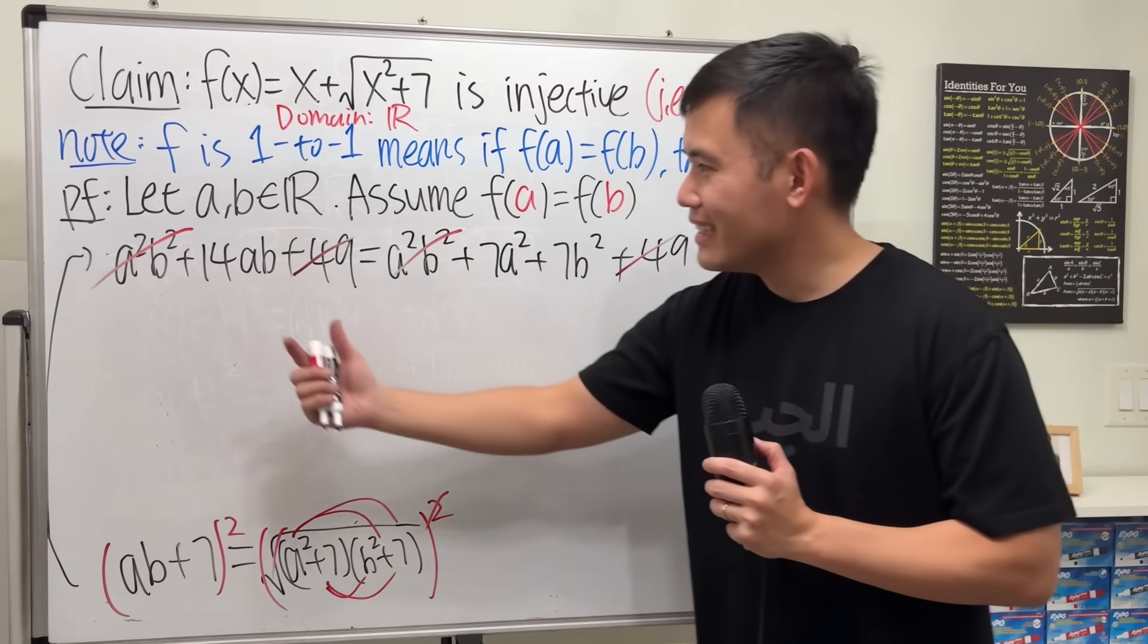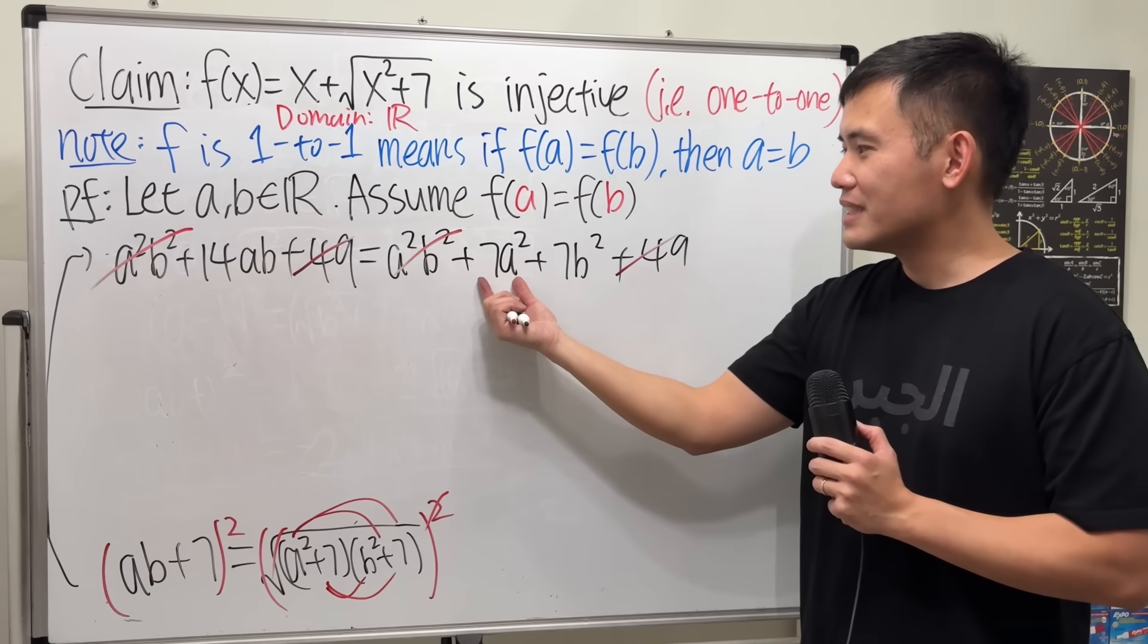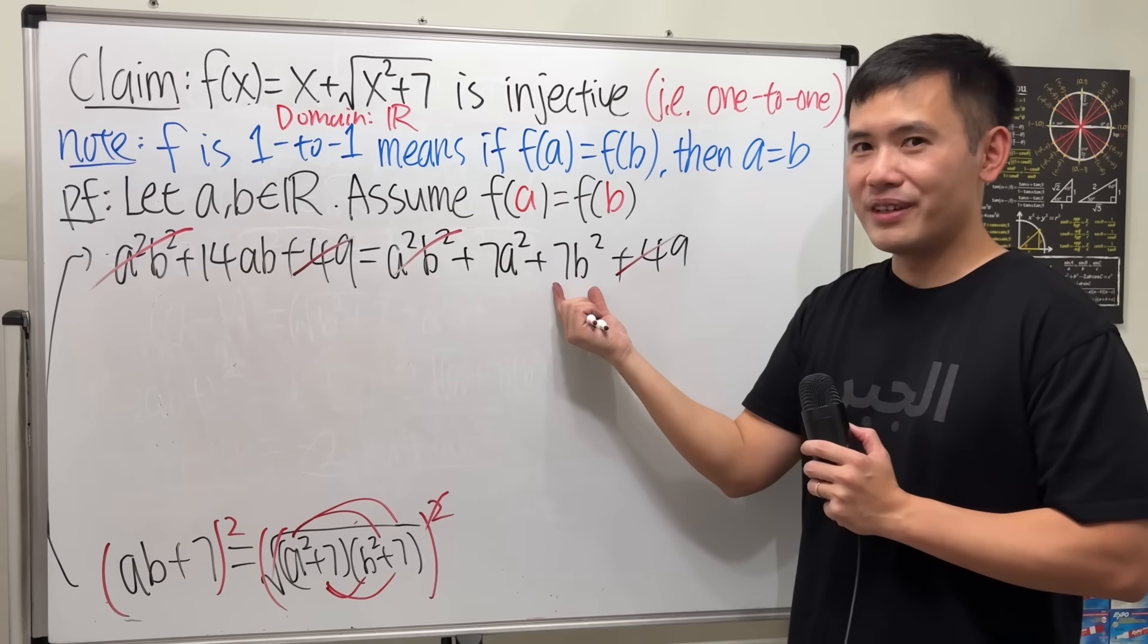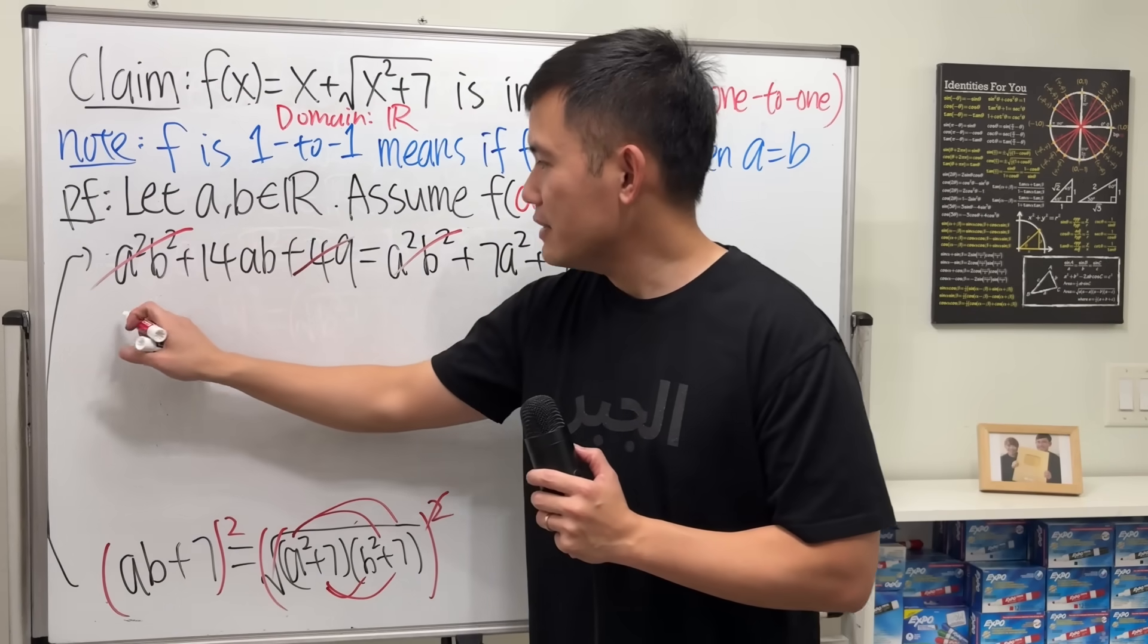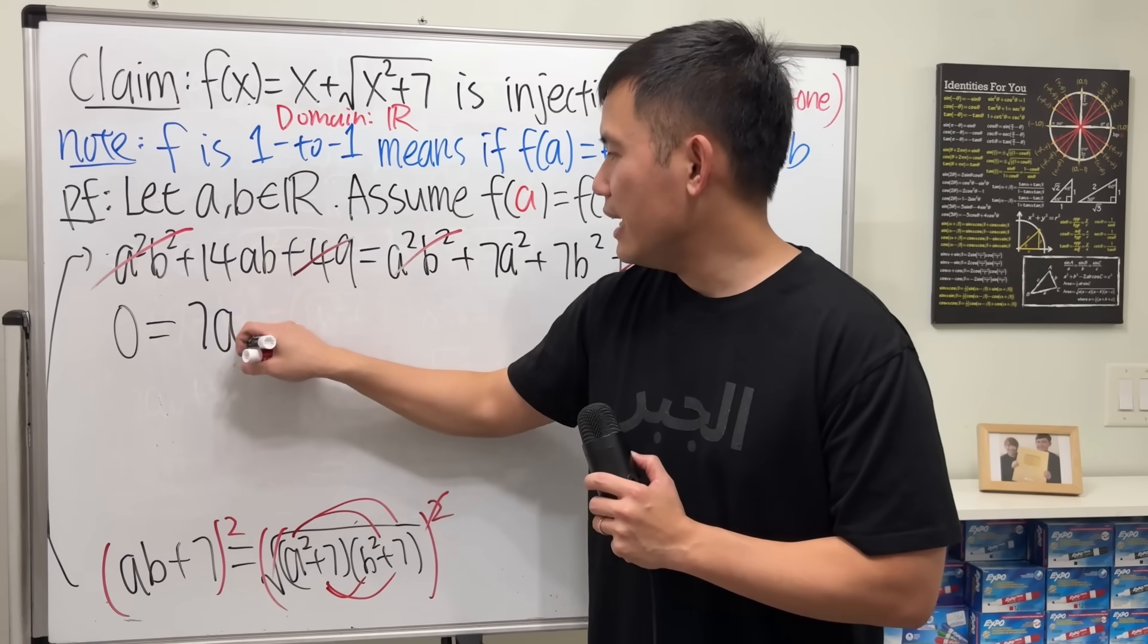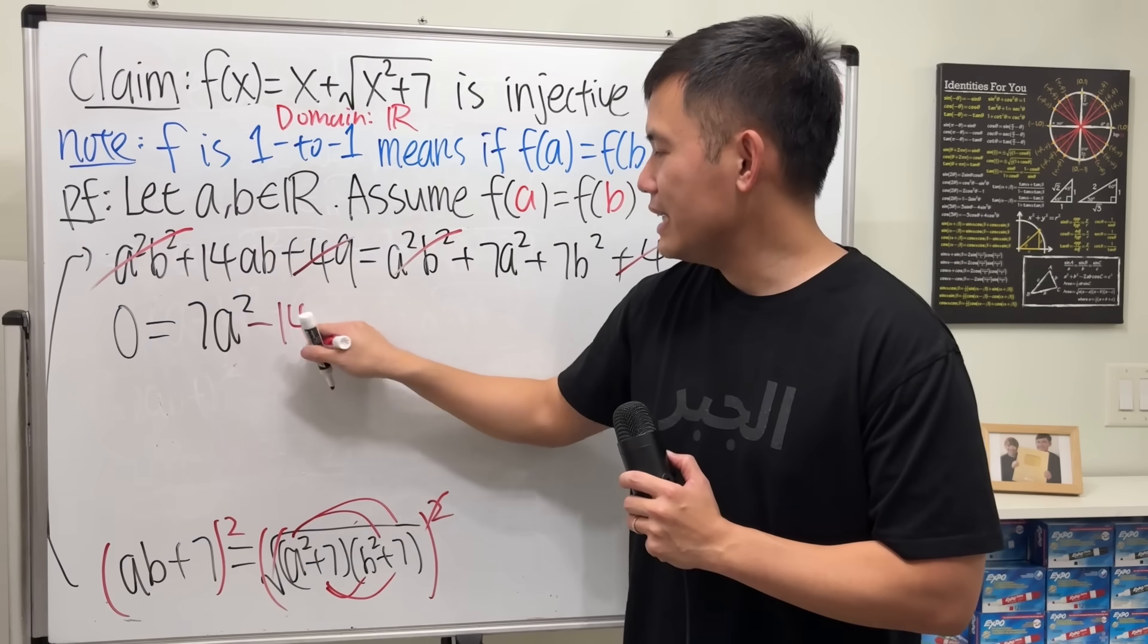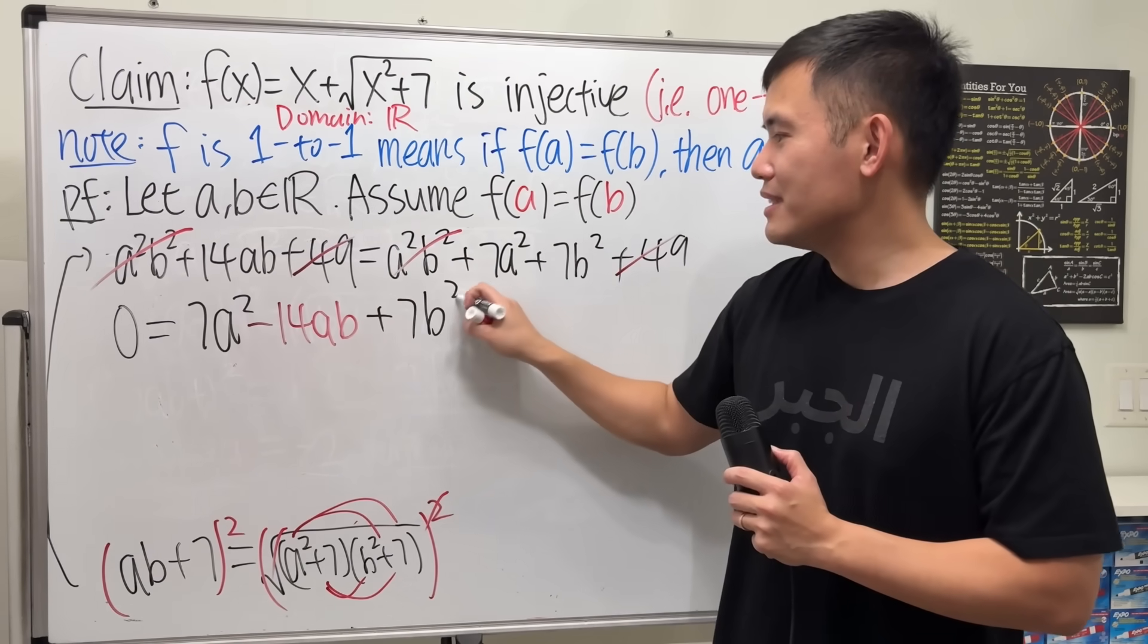This is 14ab. And here we have 7a squared and 7b squared. Let me subtract 14ab to both sides. So, the left-hand side is now 0. And then we have 7a squared minus 14ab, and then plus 7b squared.